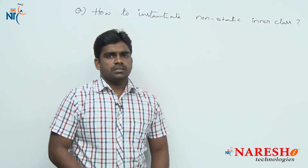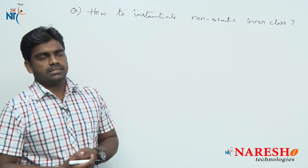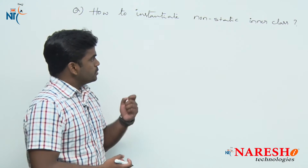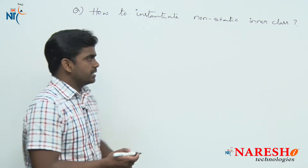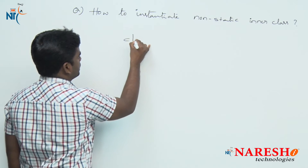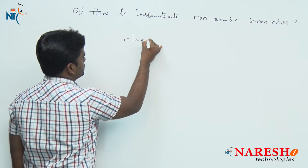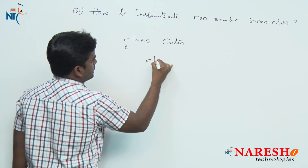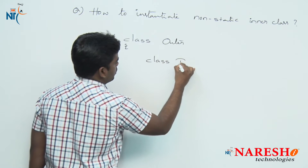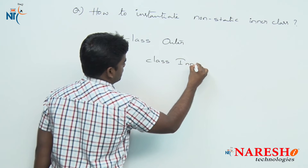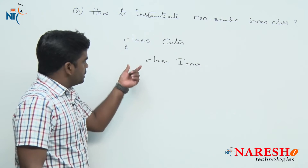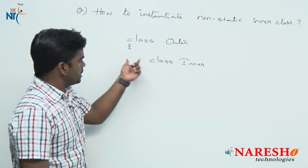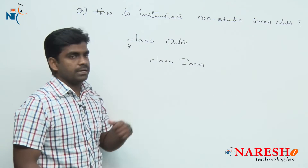We know that there are static inner classes and non-static inner classes. Now here the question is, for example, take one outer class. Inside is an inner class which is a non-static inner class. If you write the static modifier before it then it becomes a static inner class, but right now it is a non-static inner class.